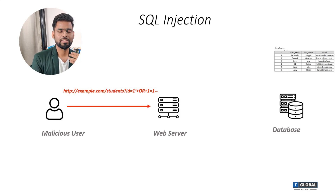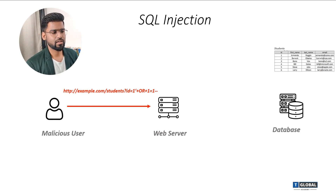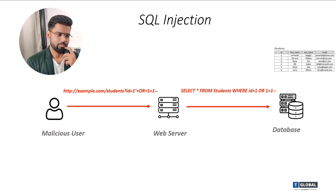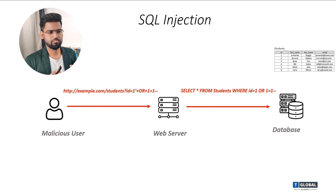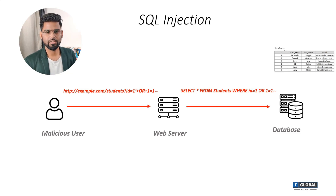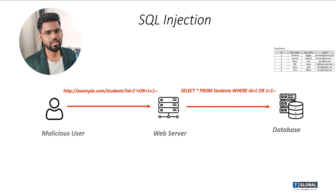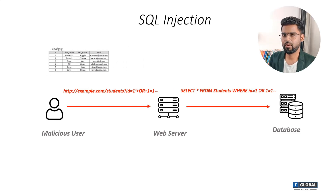The condition 1=1 is always true. So the query becomes: SELECT * FROM student WHERE ID=1 OR 1=1 -- and the double dash means anything after it is treated as a comment. Since 1=1 is true for all entries, the condition matches every row in the database. That means the entire database is returned to the malicious user — and that's how SQL injection works.